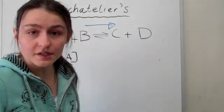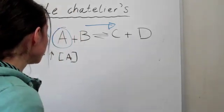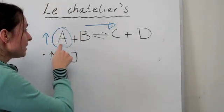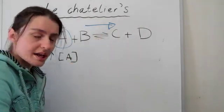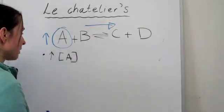That's the only way to decrease A. So by increasing A, Le Chatelier's principle says we have to go in a direction that will reduce A and that is going forward.